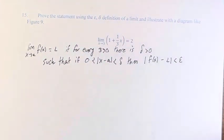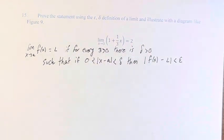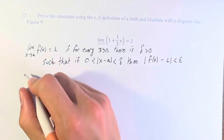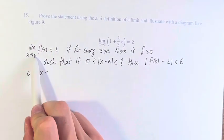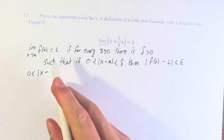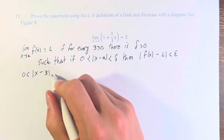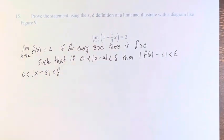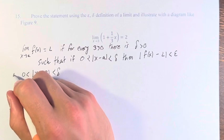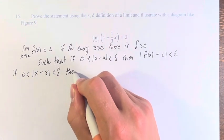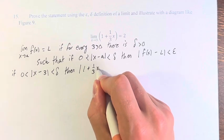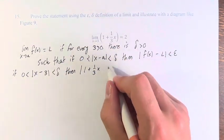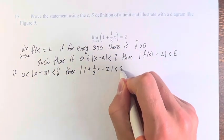So how do we actually go about proving this? The first thing to note is how do we plug these values in. We're looking at 0 less than the absolute value of x minus a, where a is the value x is approaching, which here is 3, is less than delta. If this is true, then f(x) — which is 1 plus one-third x — minus L, which is the value of the limit, so 2, is less than epsilon.